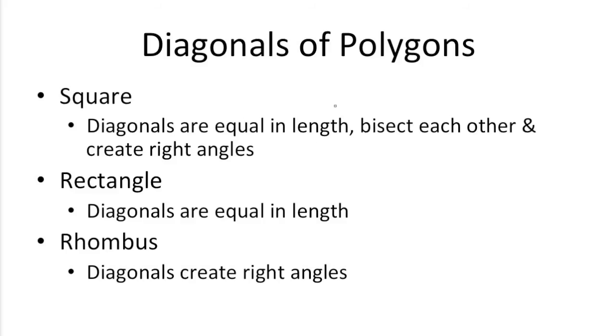So there are certain things you're going to need to know about the diagonals of polygons. For squares, the diagonals are equal in length, and they bisect each other and create right angles. So these angles on the inside are all going to be right angles. This and this and this and this on the inside, all these segments created by the diagonals are all going to be of equal length as well.